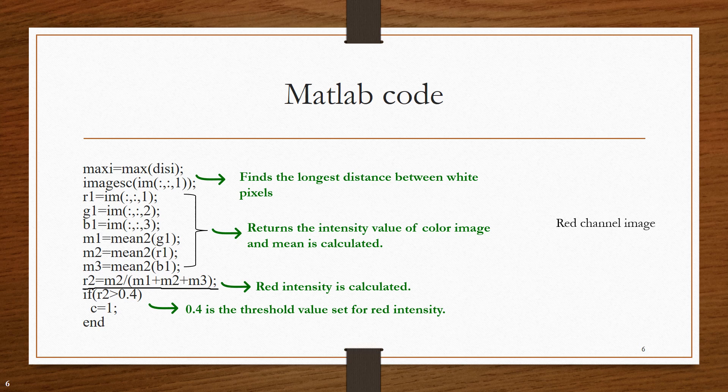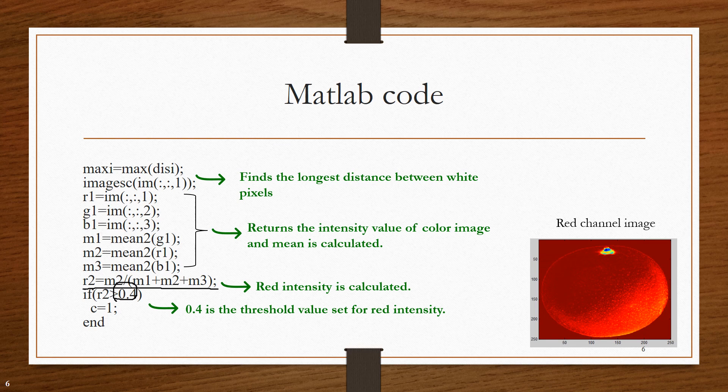If the variable r2 is greater than this threshold 0.4, then c is given as 1. So, based on this c value, the fruit is being graded as sweet and not sweet. And this is the red image of the orange fruit.